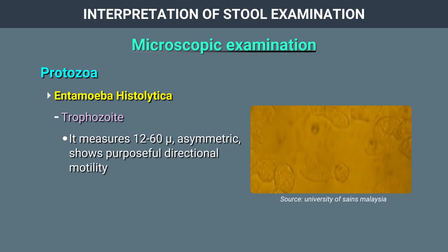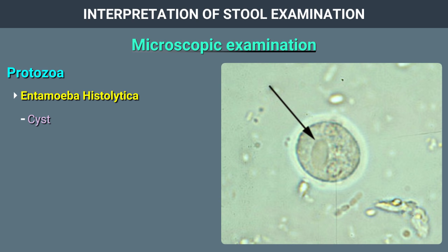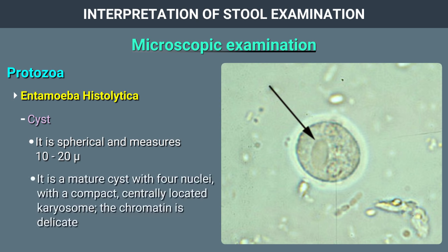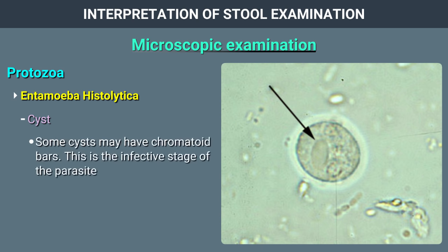Entamoeba histolytica trophozoite measures 12 to 60 microns in size. It is asymmetric, shows motility, and has a single spherical nucleus, a single central karyosome, and delicate and evenly distributed chromatin. The cyst is spherical, measures 10 to 20 microns. It is a mature cyst with 4 nuclei, a compact centrally located karyosome, and delicate chromatin. Some cysts may have chromatoid bars. This is the infective stage of the parasite.